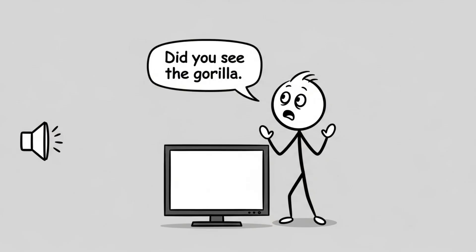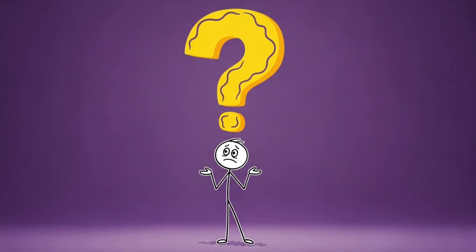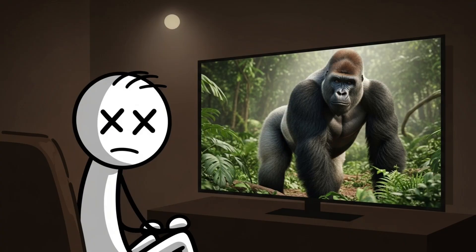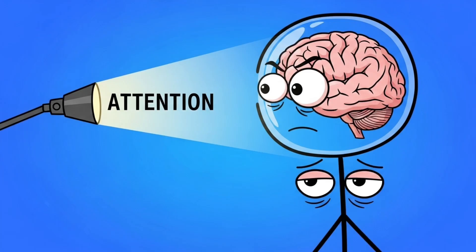Then the video ends, and someone asks, 'Did you see the gorilla?' What gorilla? That's the point. In the middle of the clip, a person in a gorilla suit walks across the screen, beats their chest, and leaves. Half of people watching completely miss it. Why? Because your brain doesn't see with your eyes — it sees with your attention.